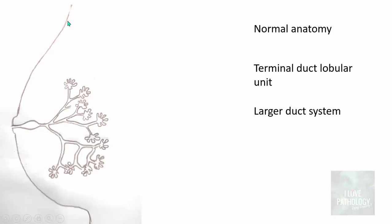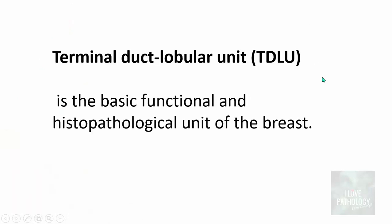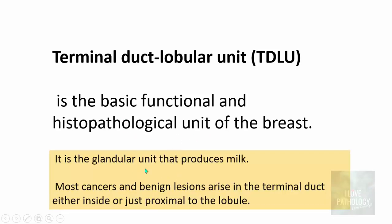Breast is made up of two major components. One is the terminal duct lobular unit, which I will be discussing in great detail. The next part is the larger duct system. The ducts which emerge from the terminal duct lobular unit form a subsegmental duct, then the segmental duct, and then they finally merge into a larger lactiferous duct, which opens onto the nipple. This is the terminal duct lobular unit — the basic functional and histopathological unit of the breast, the glandular unit that produces milk. Most cancers and benign lesions arise in the terminal duct, either inside or just proximal to the lobule.